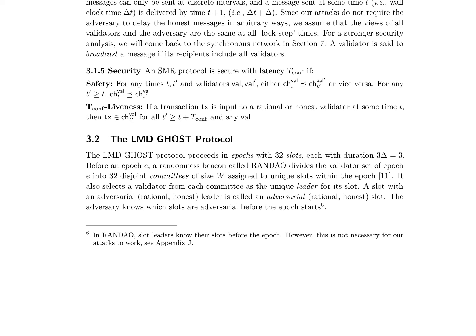Finally, the authors introduce the LMD Ghost protocol, which proceeds in epochs with 32 slots, each with duration 3Δ. A randomness beacon called RANDAO divides the validator set into 32 disjoint committees of size W, assigned to unique slots within the epoch, and selects a validator from each committee as the unique leader for its slot.